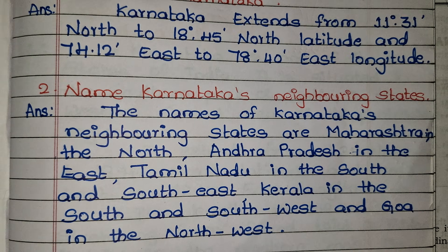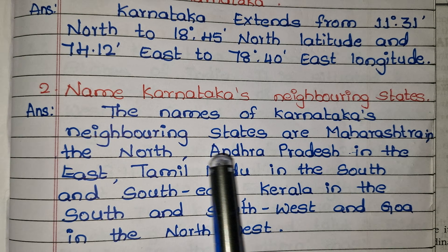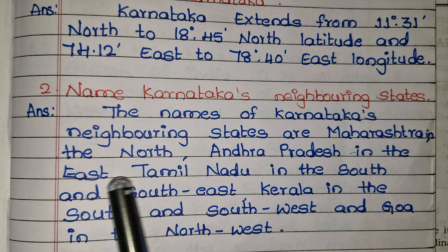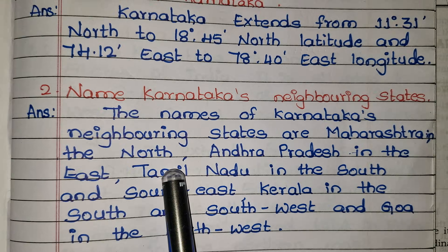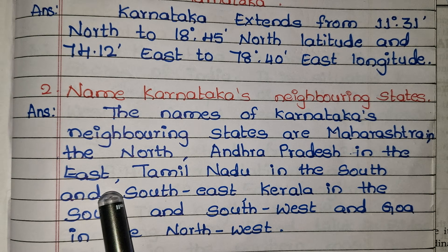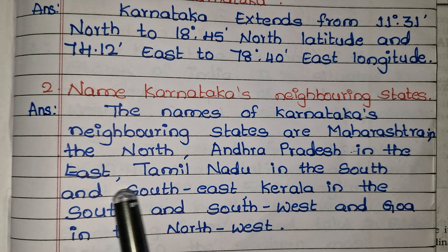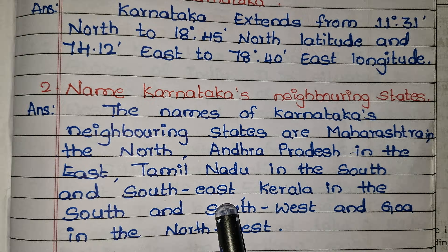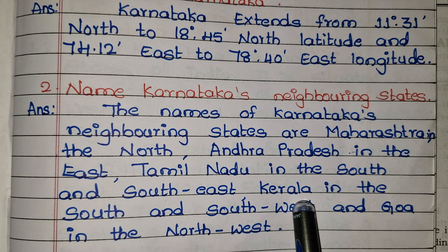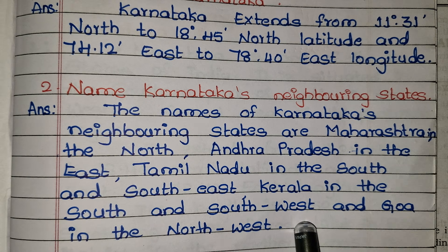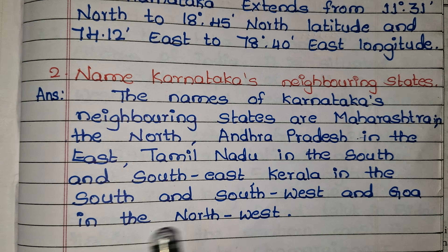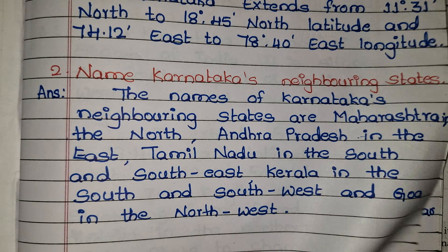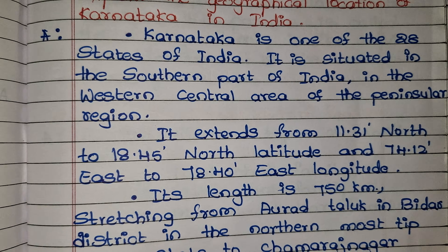Name Karnataka's neighboring states. The names of Karnataka's neighboring states are: Maharashtra in the north, Andhra Pradesh in the east, Tamil Nadu in the south and southeast, Kerala in the south and southwest, and Goa in the northwest.